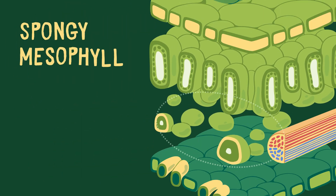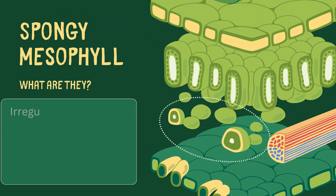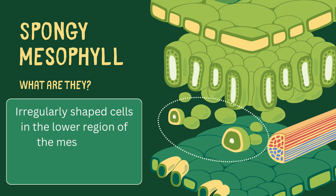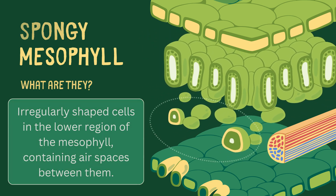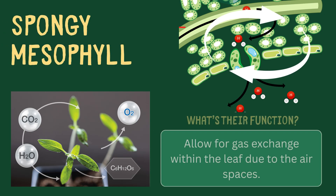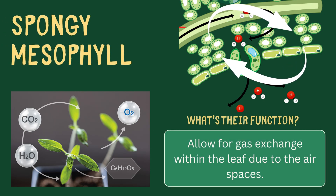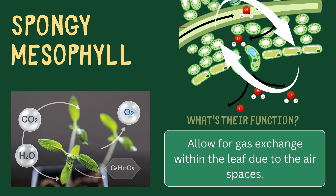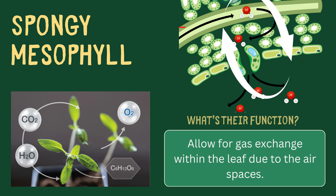Spongy mesophyll. These are irregularly shaped cells in the lower region of the mesophyll, containing air spaces between them. Spongy mesophyll allows gas exchange — carbon dioxide and oxygen diffuse through the air spaces.